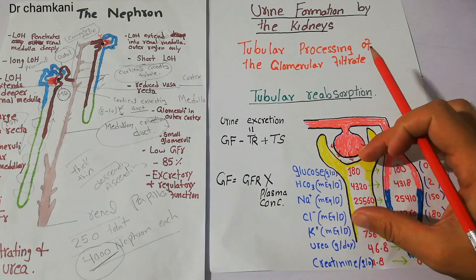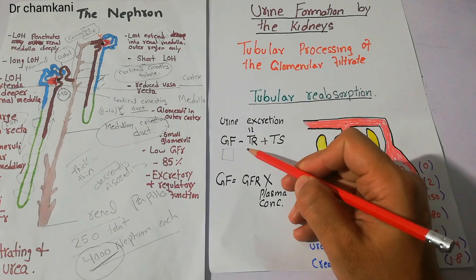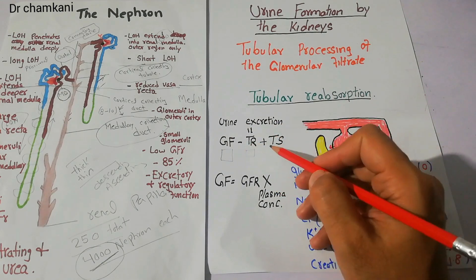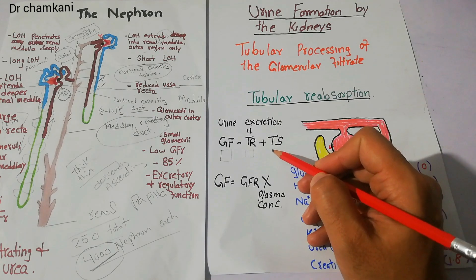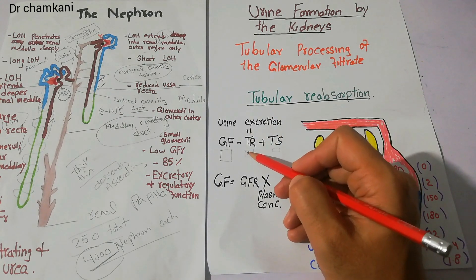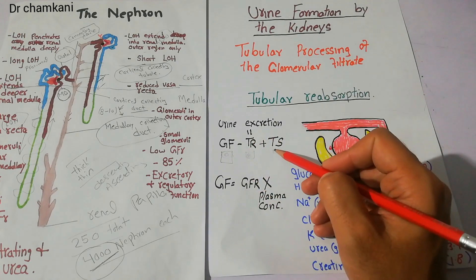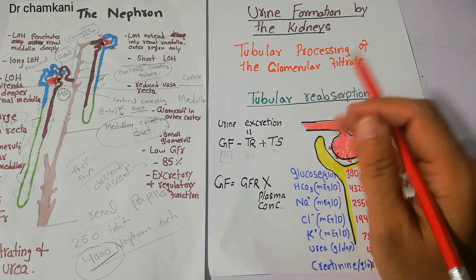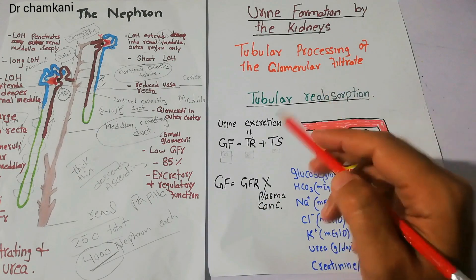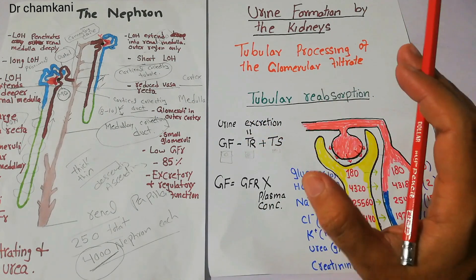For example, a certain amount of filtrate enters the tubule; some of it is reabsorbed, and some is secreted. So we subtract the reabsorbed amount from the filtration, then add the secreted amount. That gives us the urine excretion figure. In summary: urine excretion rate equals filtration minus tubular reabsorption plus tubular secretion.